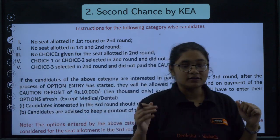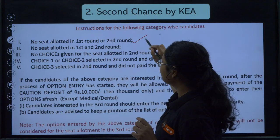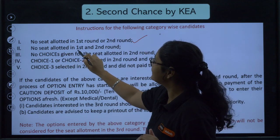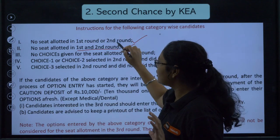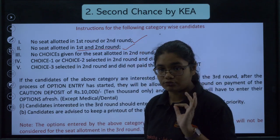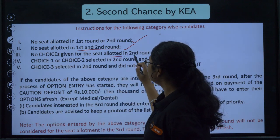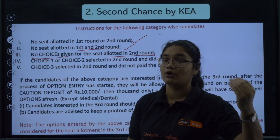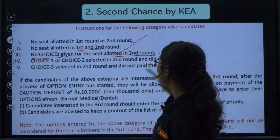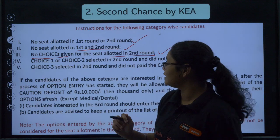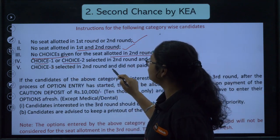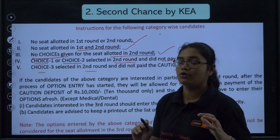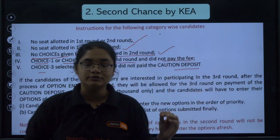Now talking about the second chance by KEA: candidates who were not allotted any seat in the first round or second round can participate in Round 3. Students who were allotted a seat in the second round but did not select any of the four choices are also eligible. Additionally, those who selected Choice 1 or Choice 2 in the second round but did not pay the fees, or those who selected Choice 3 but did not pay the caution deposit — all these students can participate in the third round.